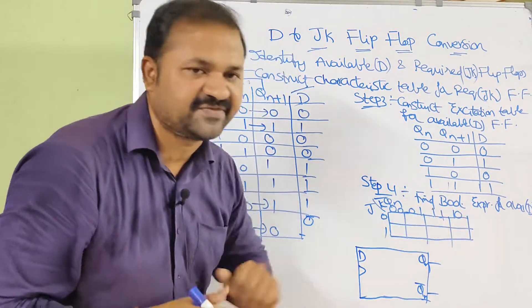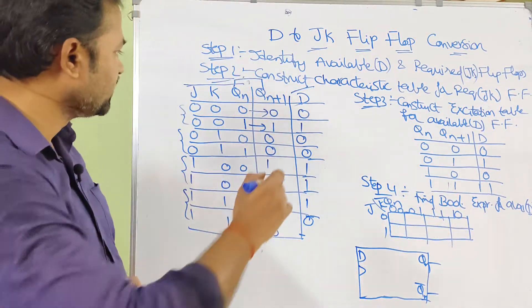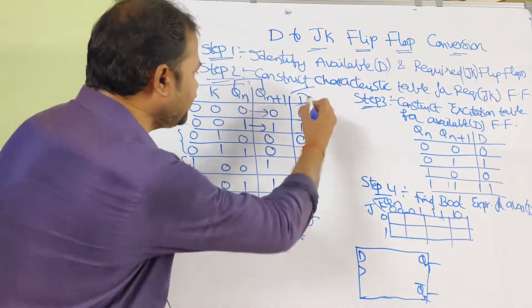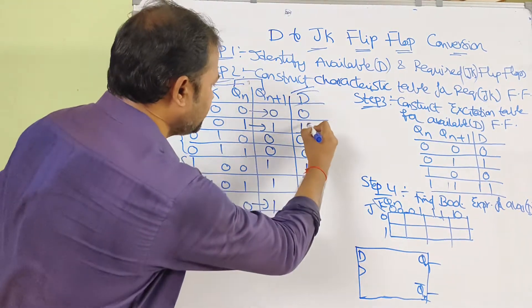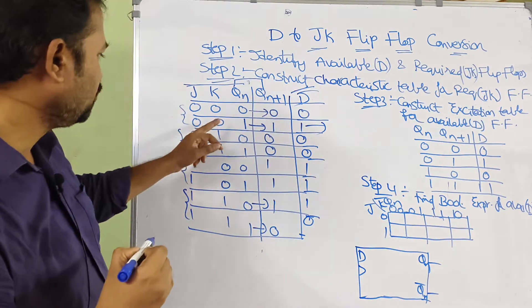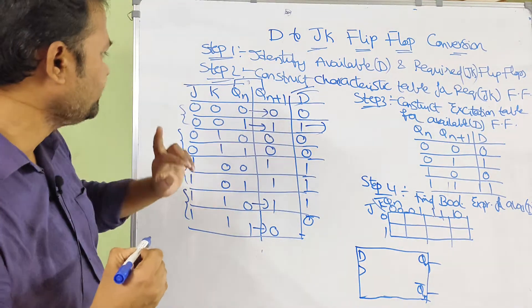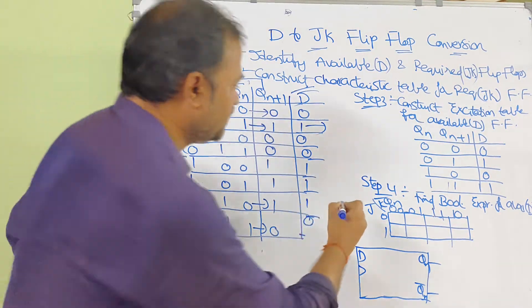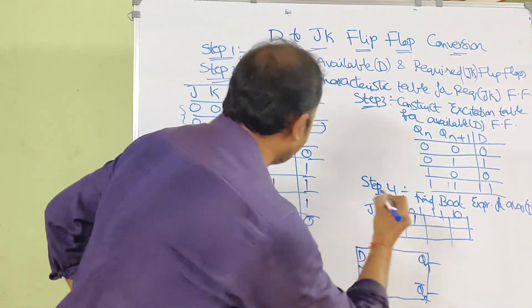Filling the Karnaugh map with values from the D column: the entries are 0, 0, 0, 1, 1, 1, 1, 0. Observing the D column, we identify the cells with value 1 for grouping.